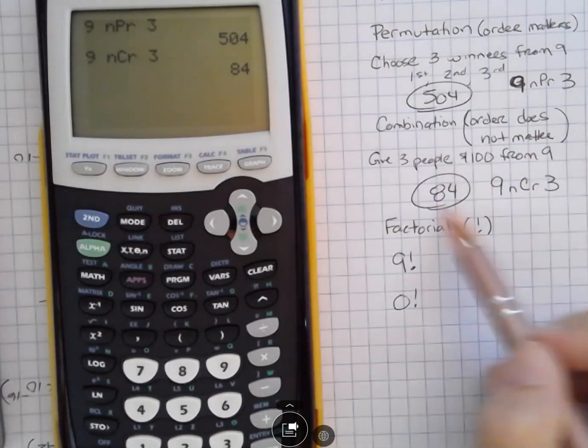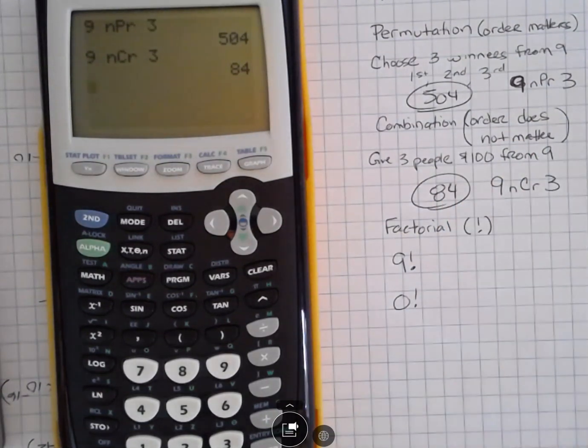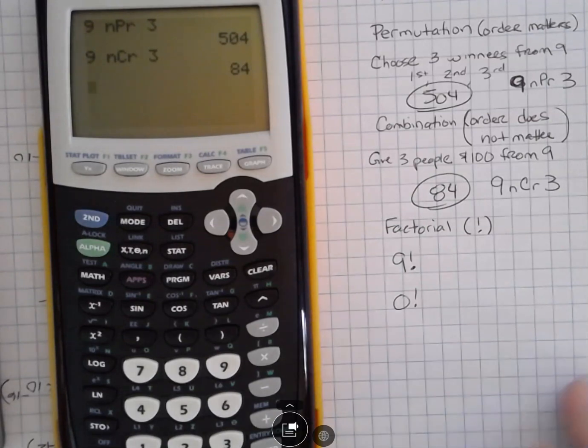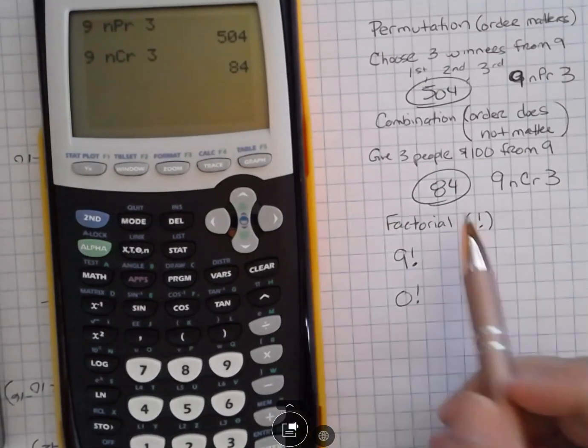When you have a combination, you have a lot fewer ways to do that because Jim, Sally, Jane is the same as Jane, Jim, Sally, right? So if you change people around, it doesn't change anything. So that's why that is fewer different combinations.